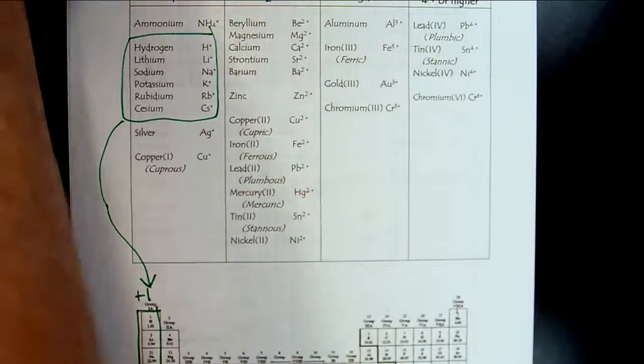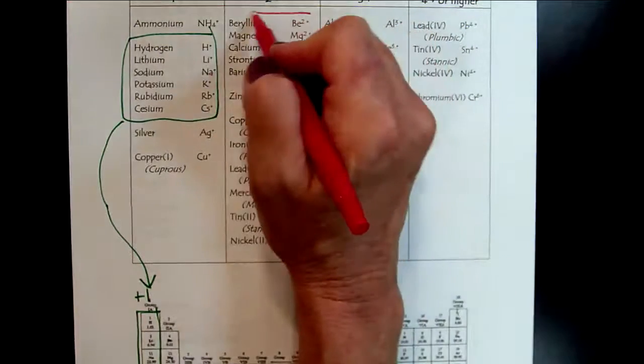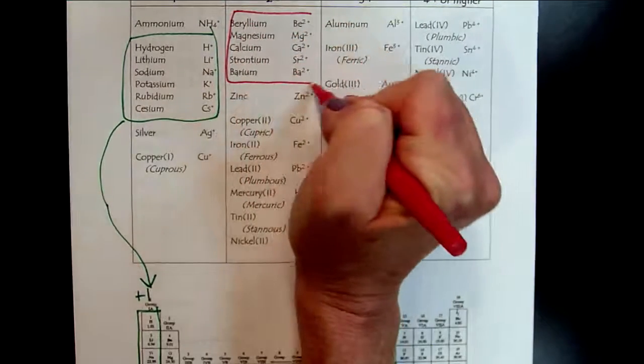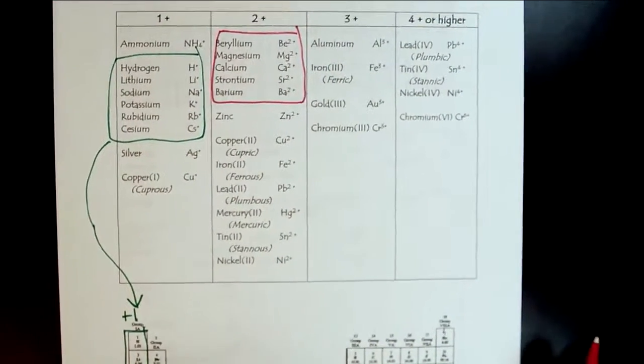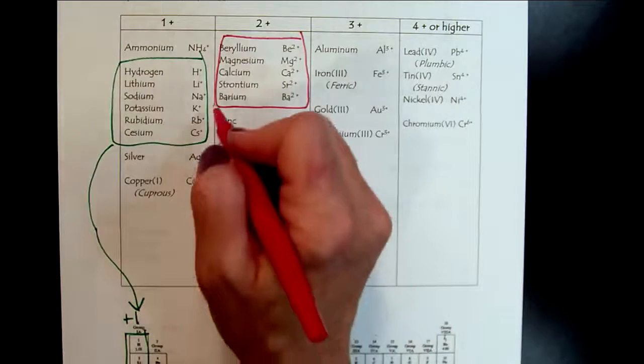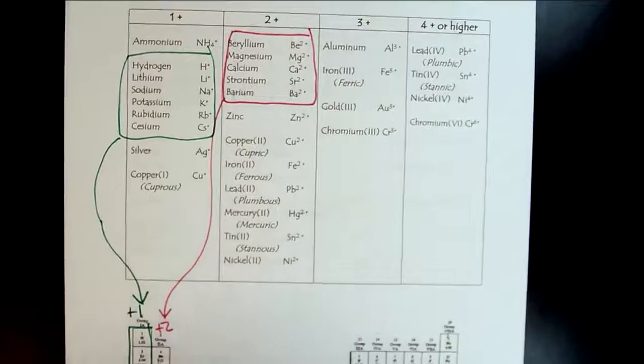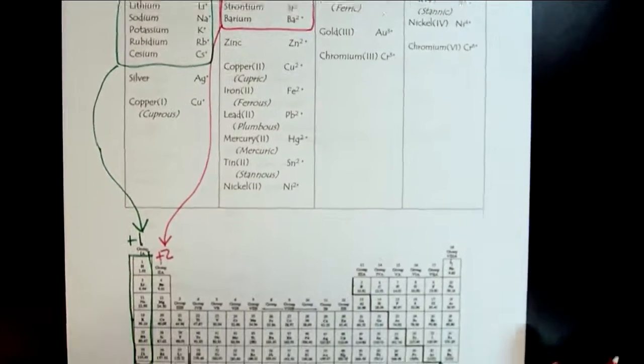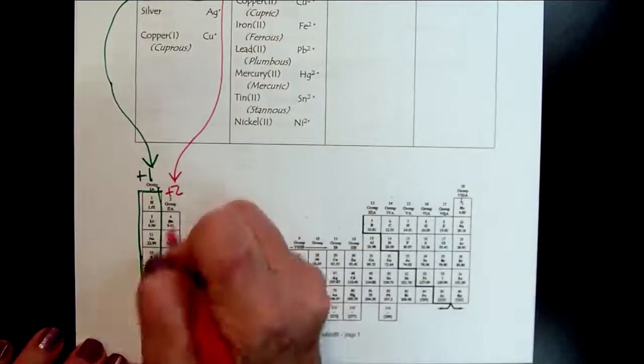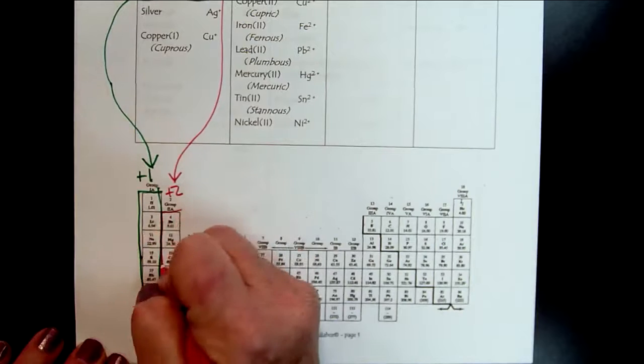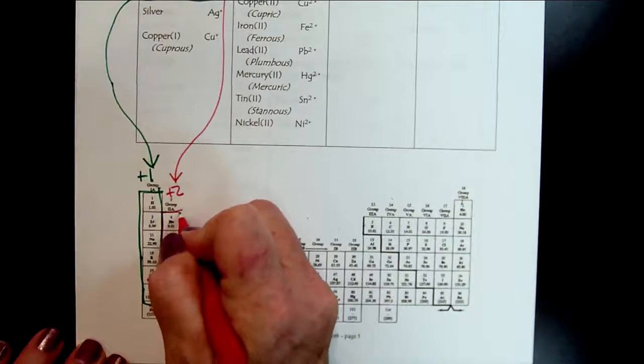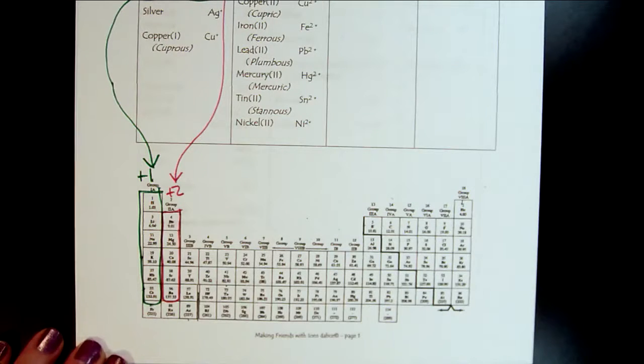Now, if we go to the second, if we look here, there is the bulk of our plus two cations. And what we can see is these are all the alkaline earth metals. So they're plus two. So once again, just based off the position on the periodic table, we've got them memorized.